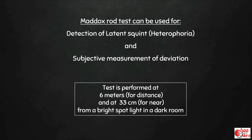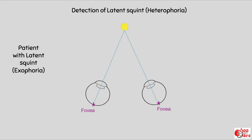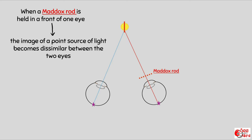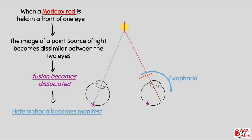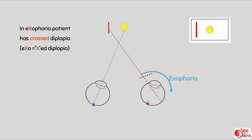For detection of latent squint: suppose there is a patient with exophoria. When the patient fixates on a point source, a single image will be seen as the phoria is overcome by the fusion reflex. But when the Maddox rod is held in front of one eye, the image becomes dissimilar between the two eyes, fusion is dissociated, and the heterophoria becomes manifest. In a patient with exophoria, light will fall on the retina at a point more temporal to the fovea, so the image will be seen as more nasal — the patient will have crossed diplopia. So in exophoria, there is crossed diplopia.